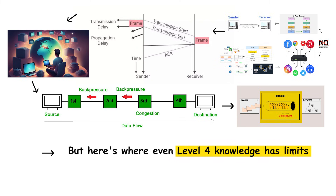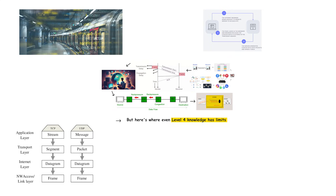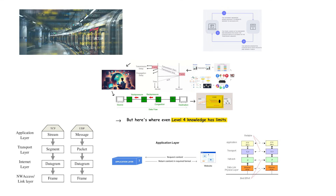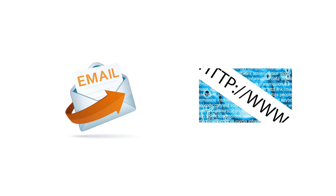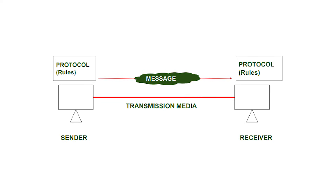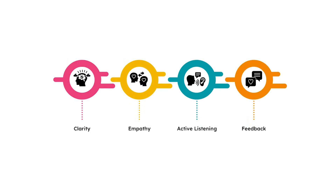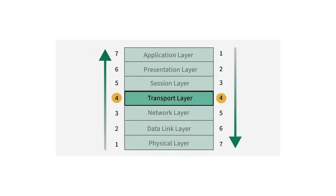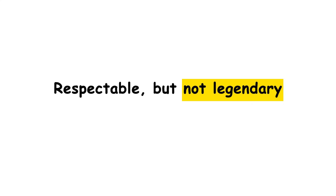But even Level 4 knowledge has limits. These people understand data transport, but they don't understand how sessions are managed, how data gets formatted for different applications, or what happens at the application layer itself. They know TCP delivers data reliably, but they can't explain how that data becomes an email or a web page. This is where serious IT professionals live — you understand protocols, you can troubleshoot connection problems, you know how reliable communication actually works — but you're still three layers away from complete mastery. Respectable, but not legendary.